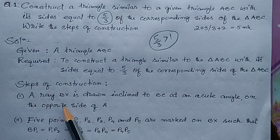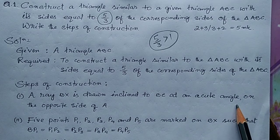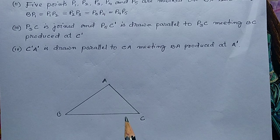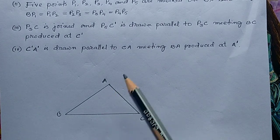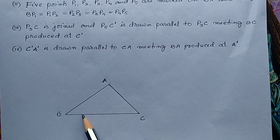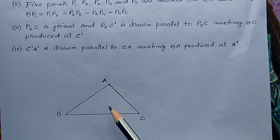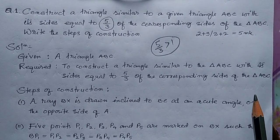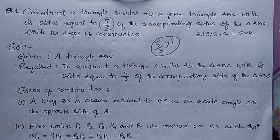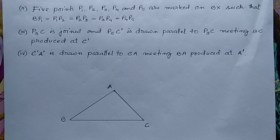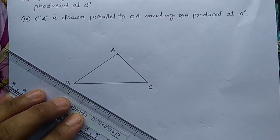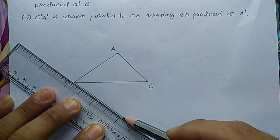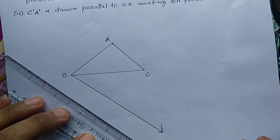Step 1: A ray BX is drawn inclined to BC at an acute angle, on the opposite side of A. In the given triangle ABC, vertex A is on top of base BC. Now we draw a ray starting from B and name it BX.